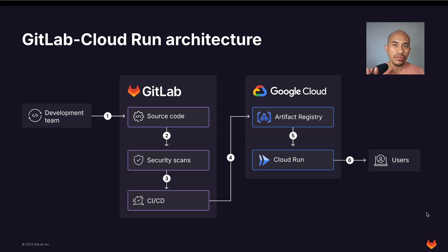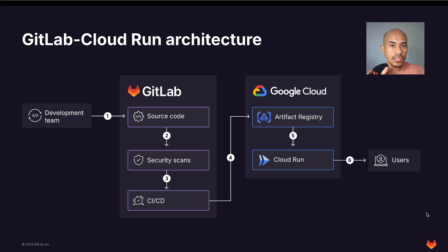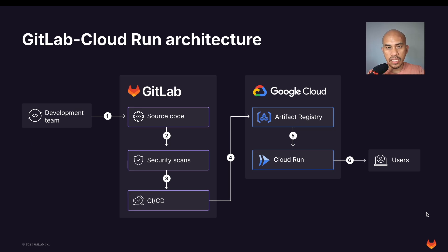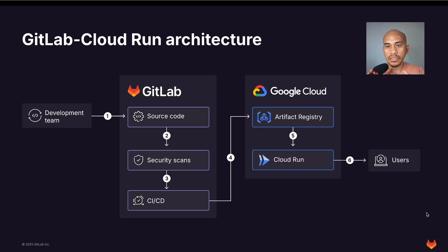Let's talk about the high-level architecture of our deployment of this AI agent. The source code is at GitLab, and once it is committed and approved, it'll then be subjected to security scans. Our CI/CD will orchestrate a deployment to Artifact Registry, which will then be deployed to Cloud Run. Prior to that, we need to have our permissions and integrations in place to make sure that the AI agent is deployed to Cloud Run properly.